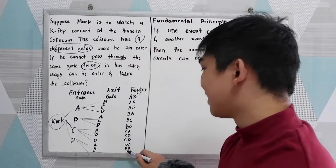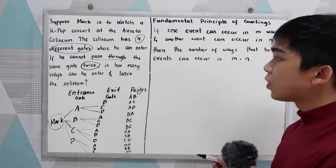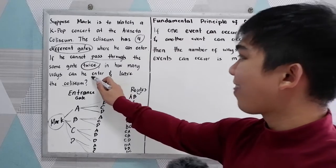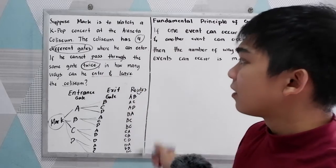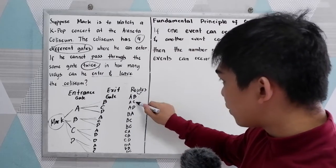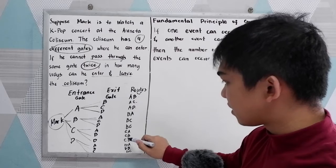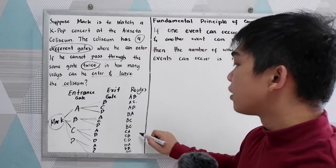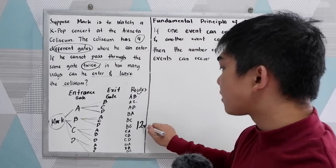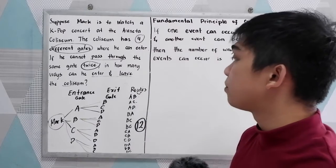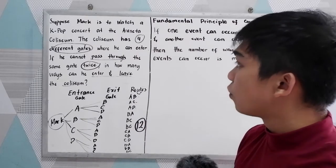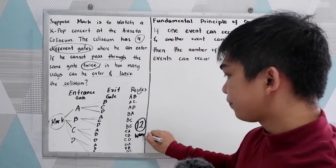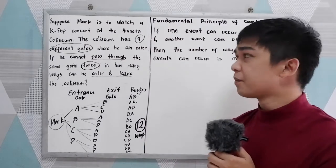So how many ways can Mark enter and exit the Coliseum? Counting all routes: 1, 2, 3, 4, 5, 6, 7, 8, 9, 10, 11, 12. So there are 12 possible ways where Mark can enter and leave the Coliseum.